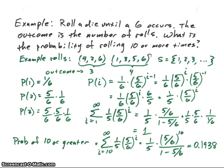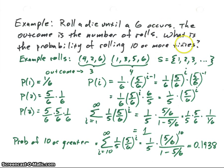Let's look at an example. We're going to roll a die and keep rolling it until a six occurs. The outcome will be the number of rolls. If we roll once and get a six, the outcome is one. If we roll a five and then a six, the outcome is two. The question is: what is the probability of rolling ten or more times — in other words, getting an outcome of ten or greater?